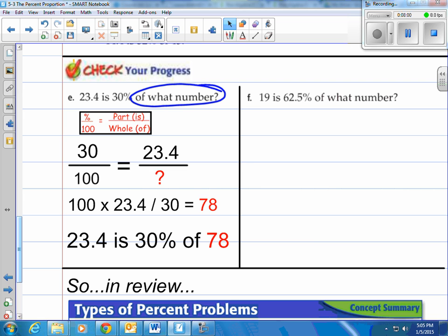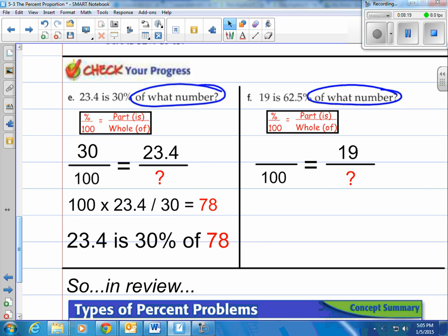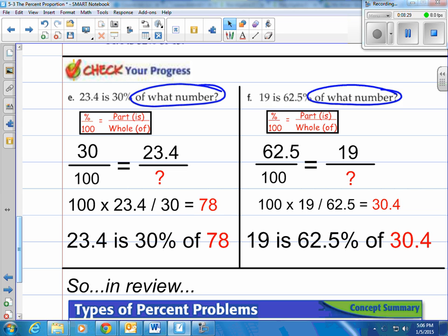Take a look at F. Same thing. 19 is 62.5% of what number? Of what number? Again, that's gonna be that bottom piece in our simple formula here. So we're gonna be looking for the whole. We do know that 19 is the is number, and 62.5 is the percent number. So we cross multiply, divide by remaining number of 62.5, and we have 30.4. 19 is 62.5% of 30.4.